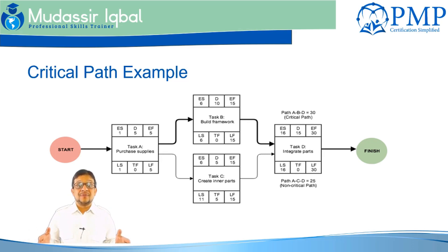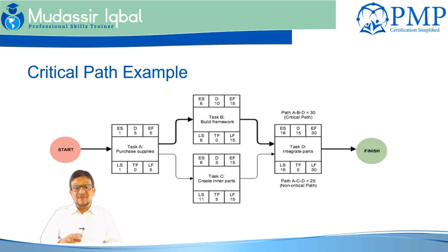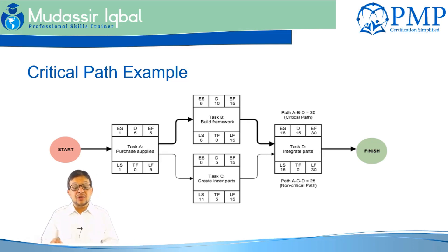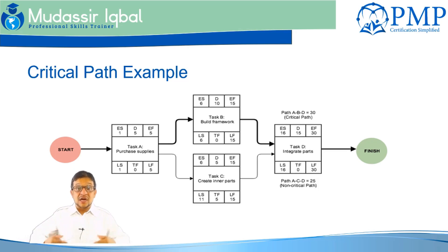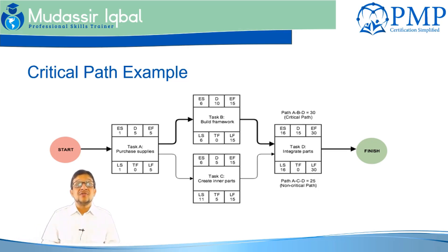We may have multiple critical paths and multiple near-critical paths. The critical path represents the minimum project duration — the latest time at which the project can be completed. It also reveals the earliest possible date the project can be completed, or how much you can delay the project without affecting the final delivery date.